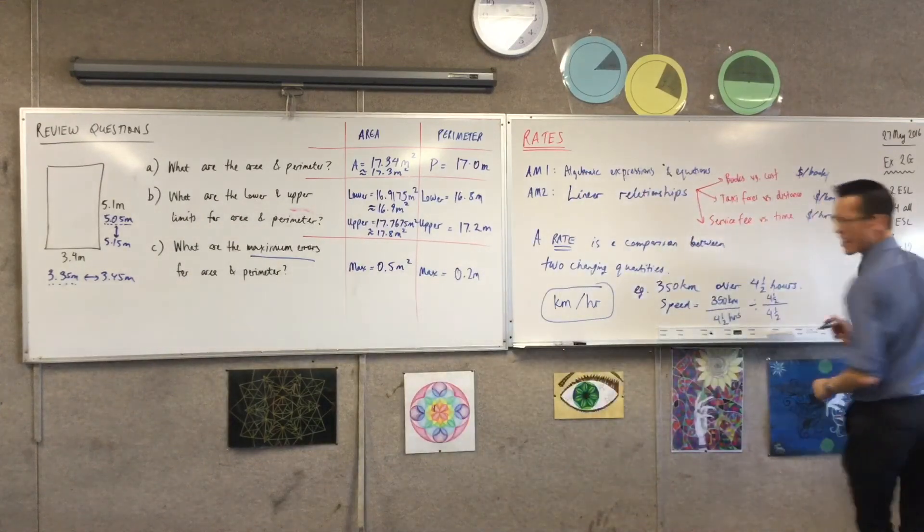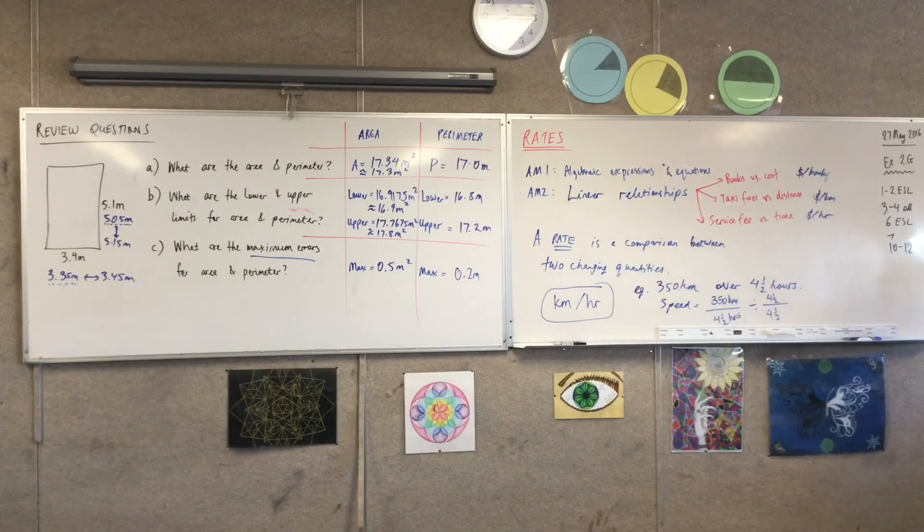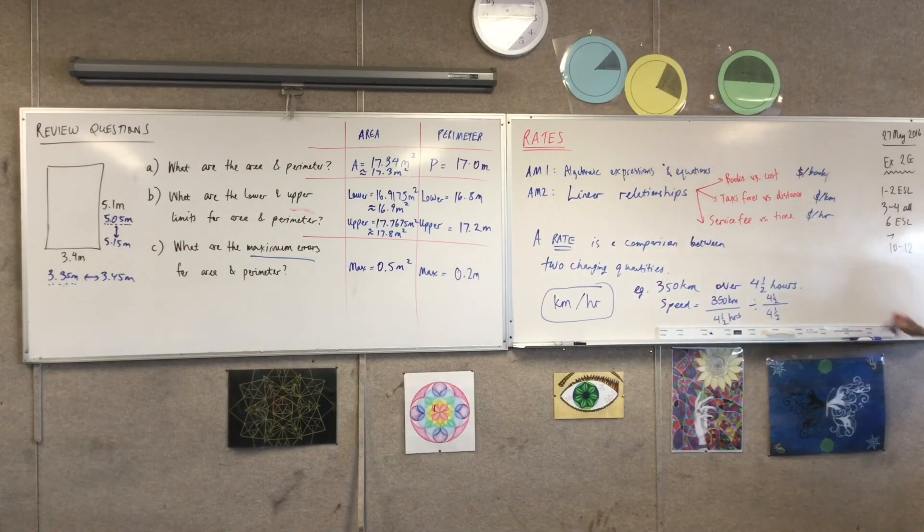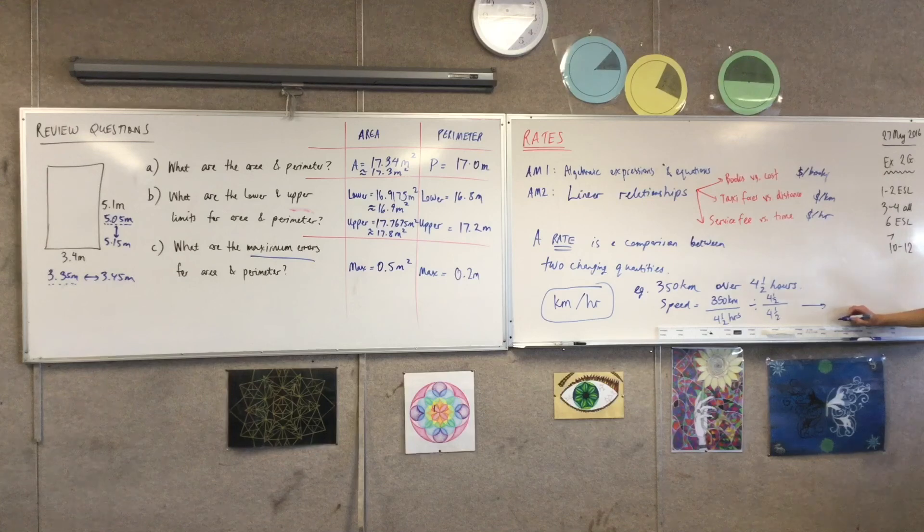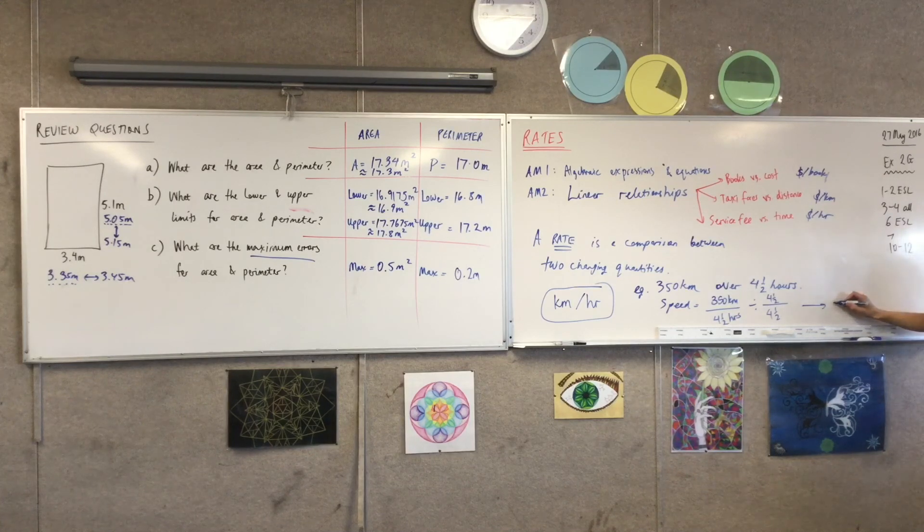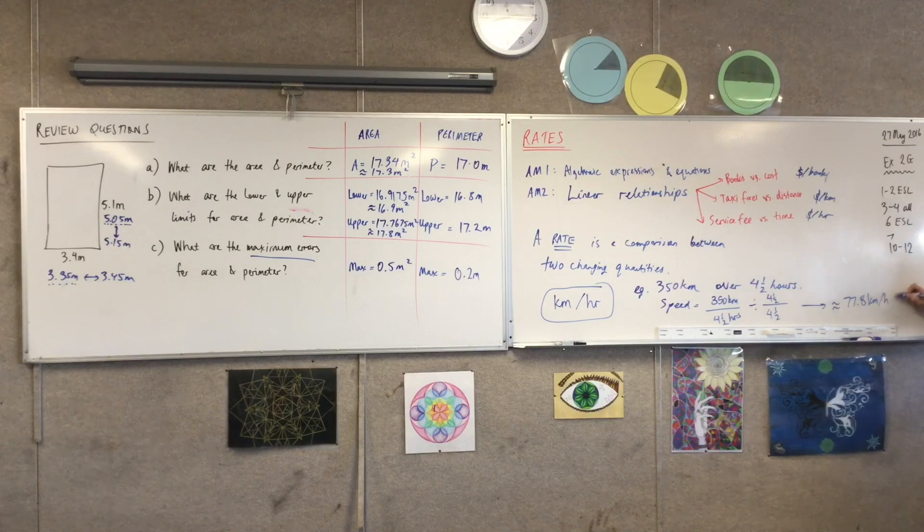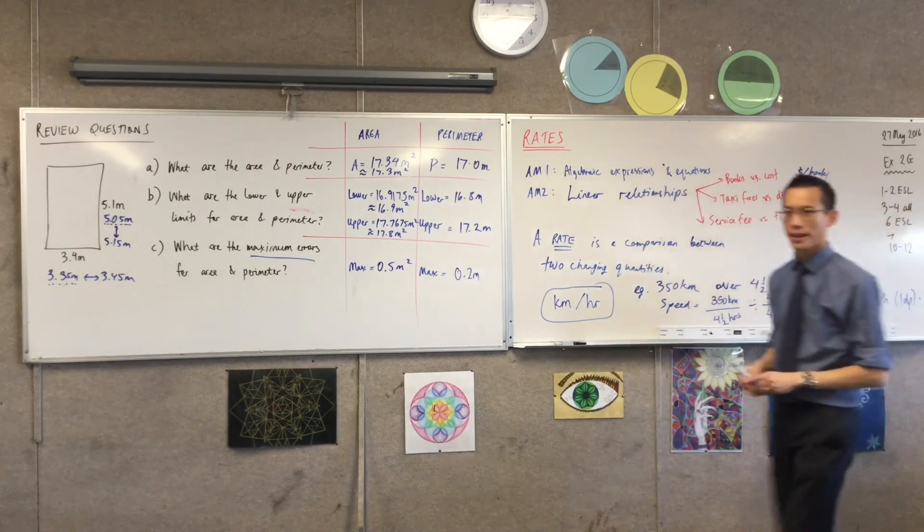77.7. Okay. Is that exact or rounded? It's like repeated seven. Sure. Okay. So in fact, I guess if we did round that, it would round, oh, poor nerd, because all those sevens are telling me. So I'm going to write approximately 77.8 kilometers per hour. Like so. Okay.